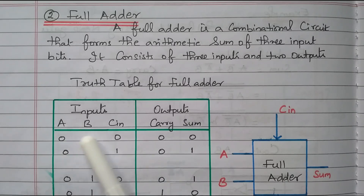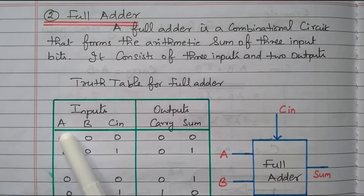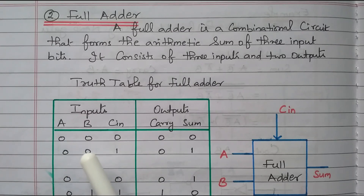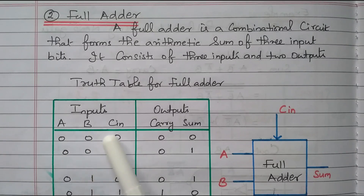So there are three inputs: A, B, and Cin. Practically, while adding two binary numbers, we definitely need a full adder with three inputs. The half adder will add only two digits A and B, not considering Cin — so practically it is not possible. Practically, while adding, we need to consider carry also. So the full adder is implemented practically with three inputs: A, B, and Cin.